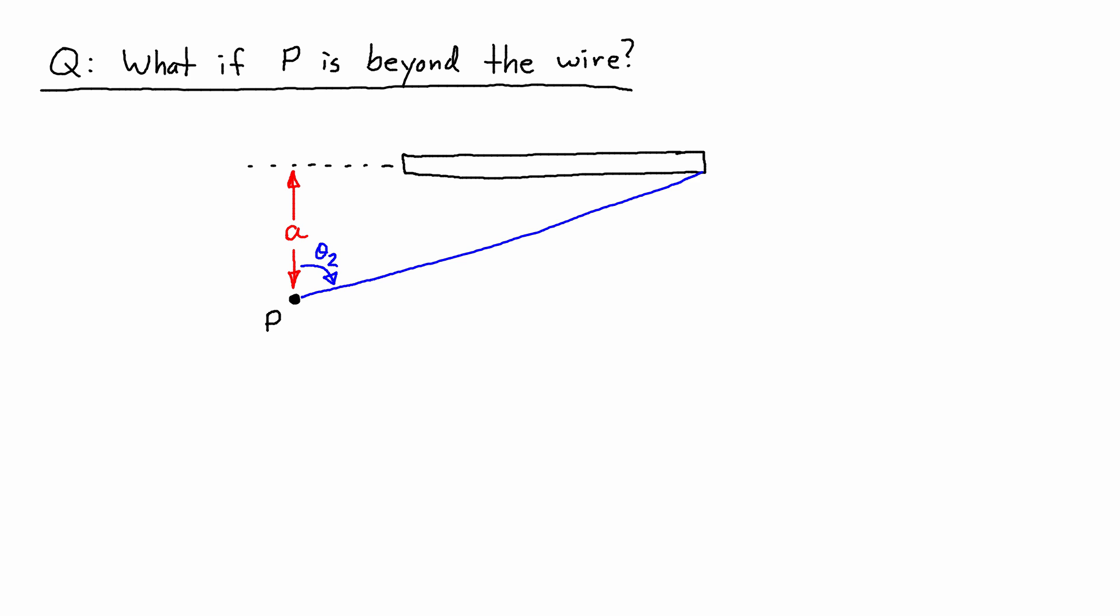When point P is beyond the wire, instead of measuring theta 1 going counterclockwise from that vertical line, which I've shown here as A, we can actually go clockwise in the other direction. So we would draw that line going to the end of the wire and then measure the angle from the perpendicular line.